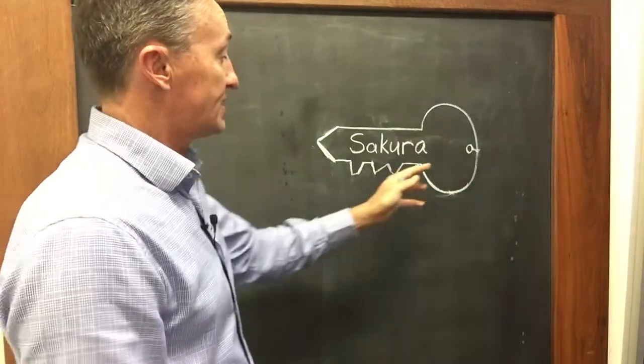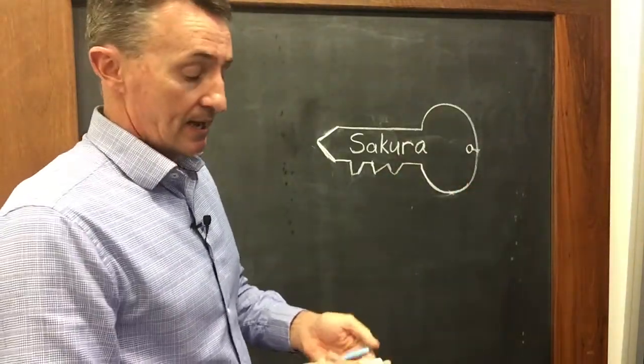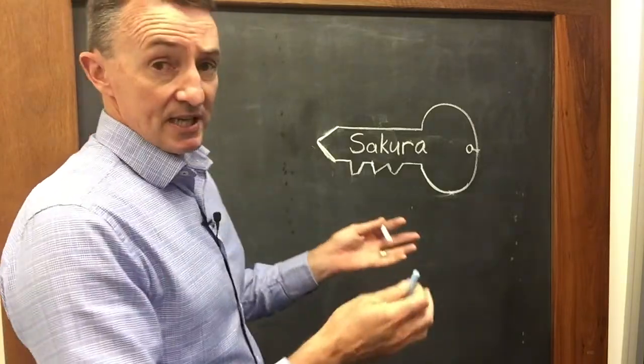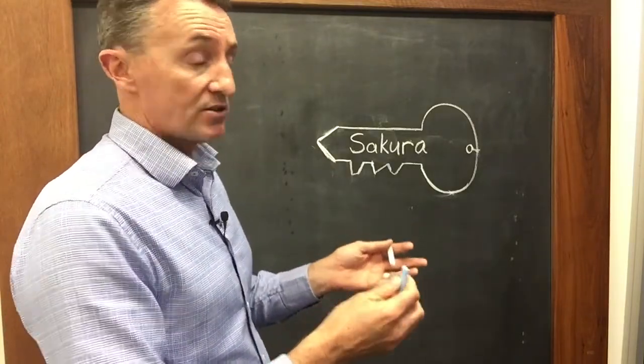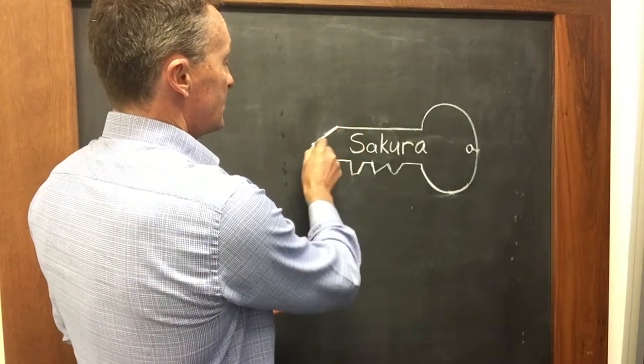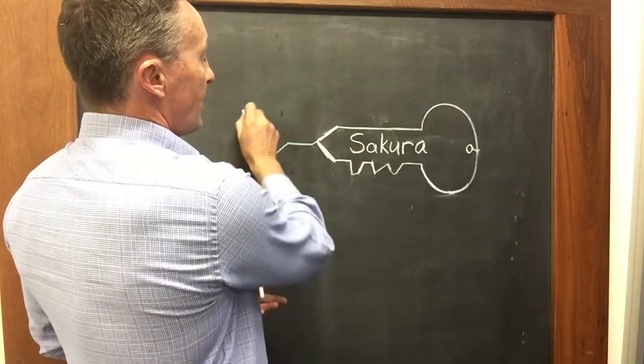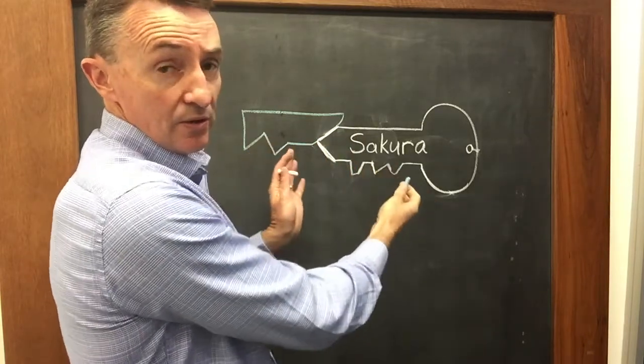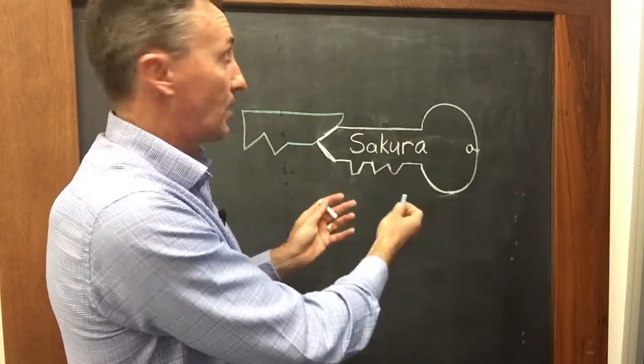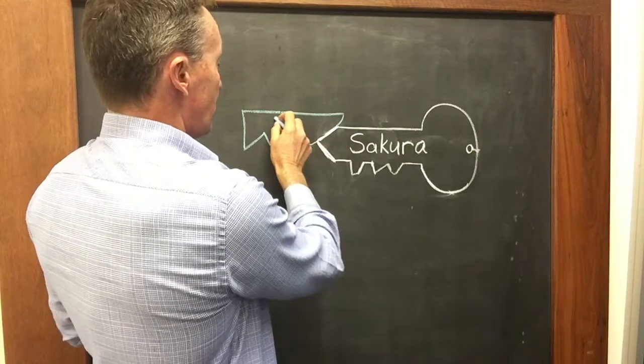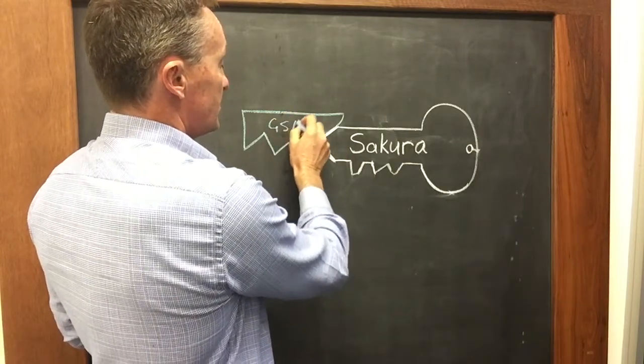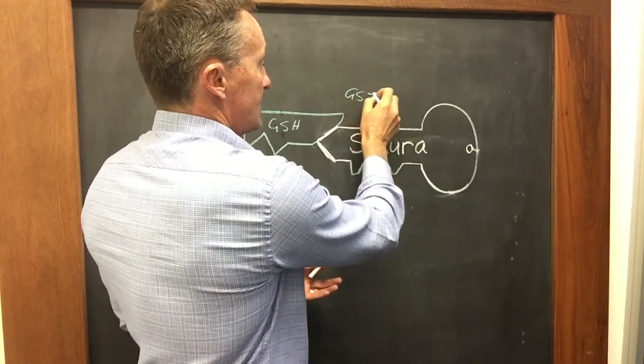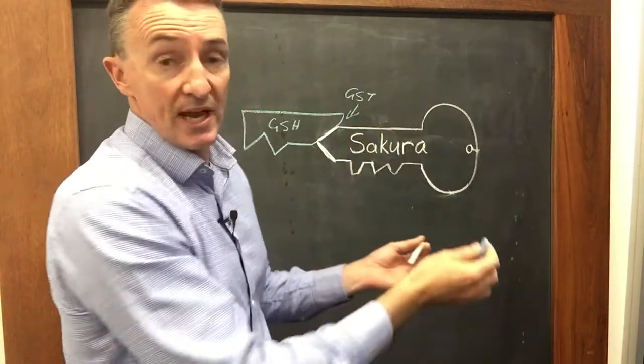Well what happens in the case of GST-mediated herbicide resistance is that the GST enzyme, glutathione S-transferase, transfers a glutathione molecule onto the Sakura molecule, onto the herbicide molecule. So this is glutathione, often referred to as GSH, and it is the GST enzyme that makes this reaction happen.